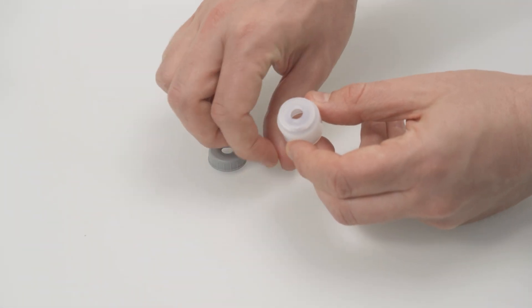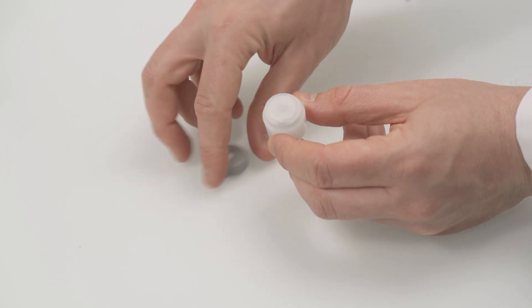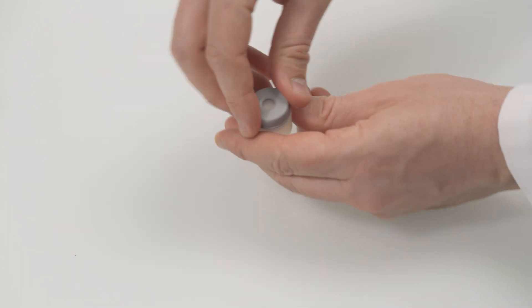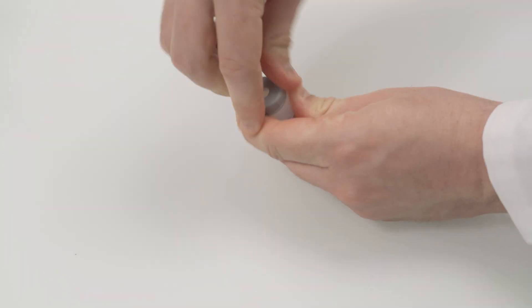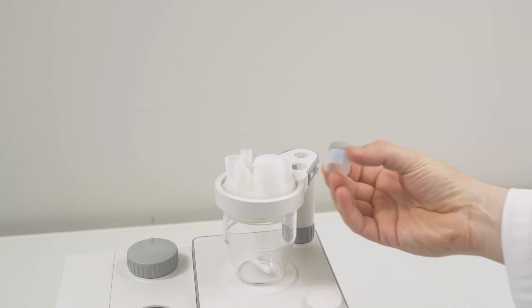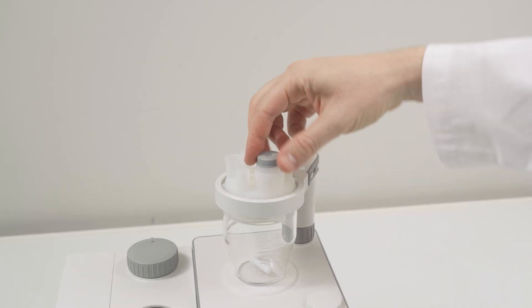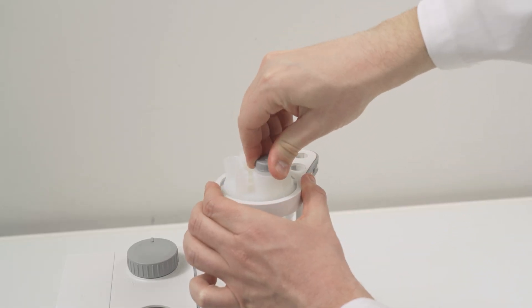Assemble the sample injection adapter. Plug it into the foreseen opening. Tighten it down by pushing it and turning it clockwise at the same time.